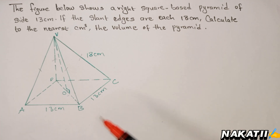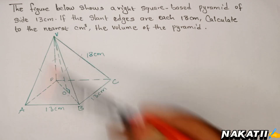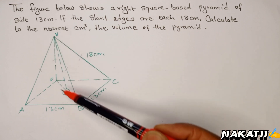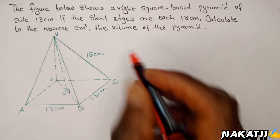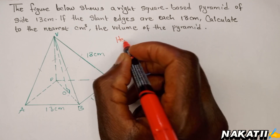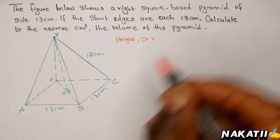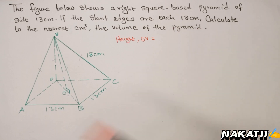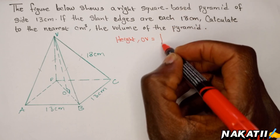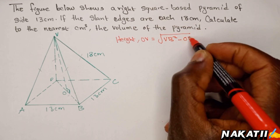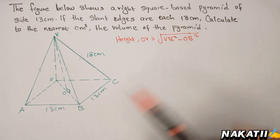We need to find the height of V, because the volume of a pyramid is one-third base area times the perpendicular height. This is the perpendicular height. How do we get this height? We say OV using Pythagoras' theorem is given by the square root of VB squared minus OB squared.